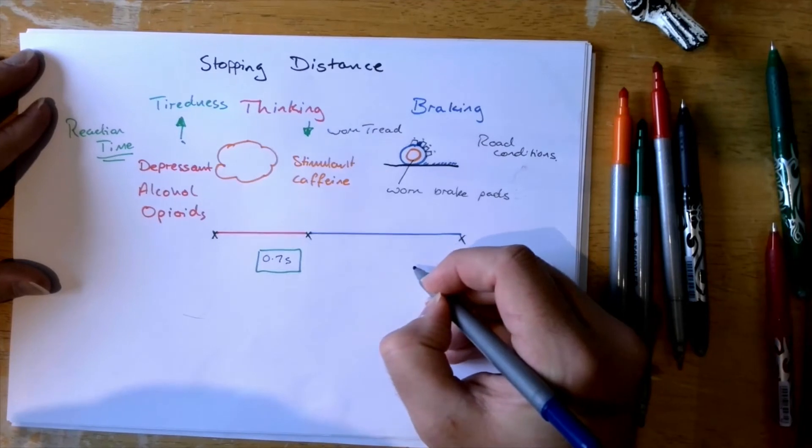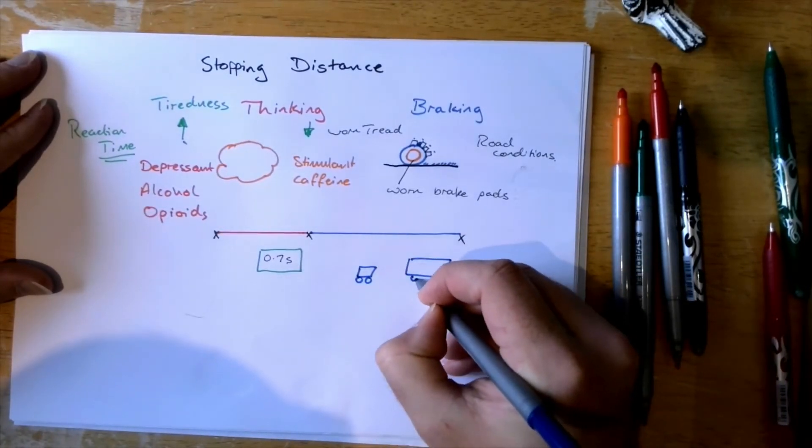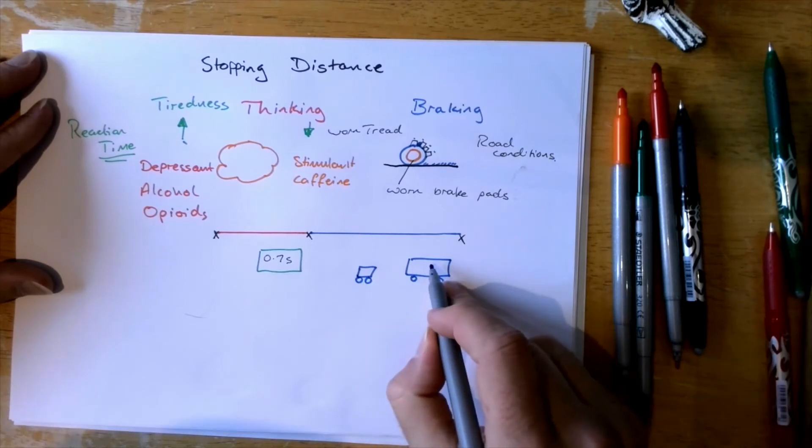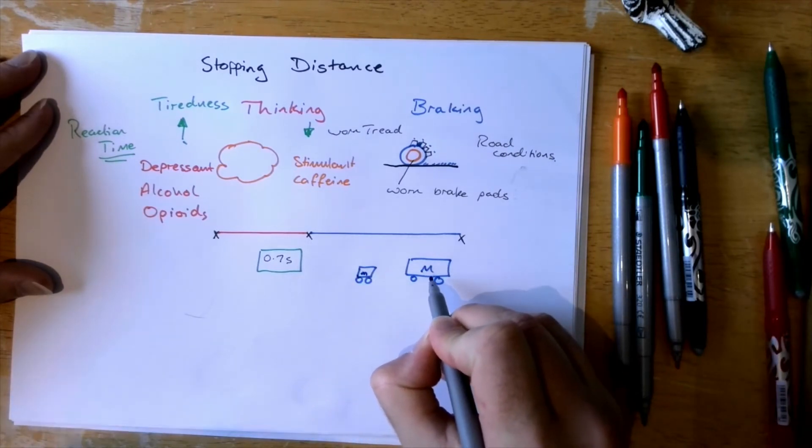If you have a small car and a big car. So if you've got a small car and something like a truck. This has obviously got more mass. Which means it will be harder to stop.